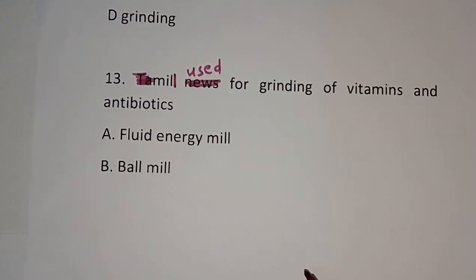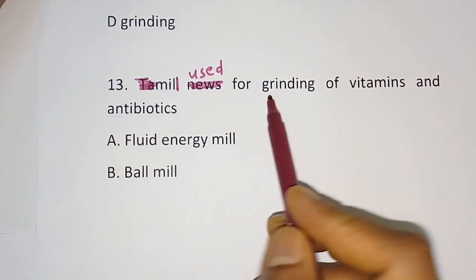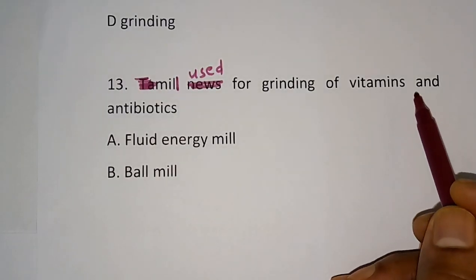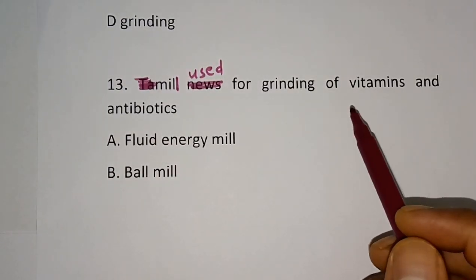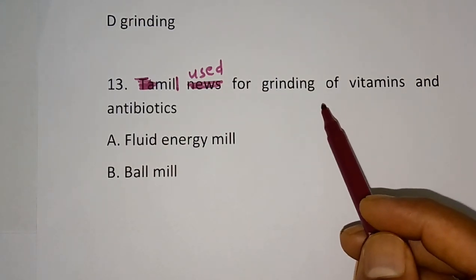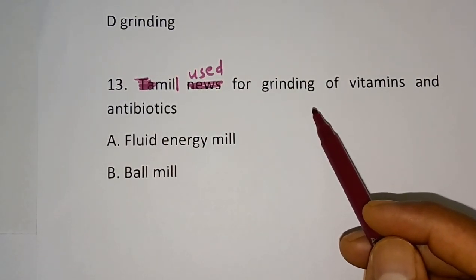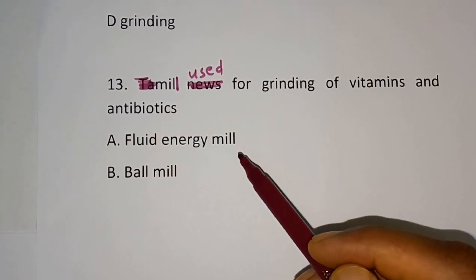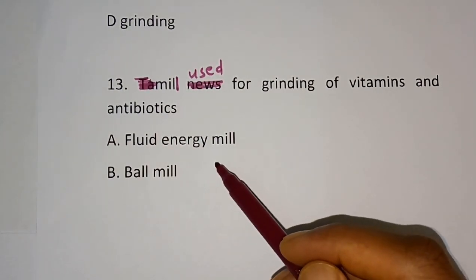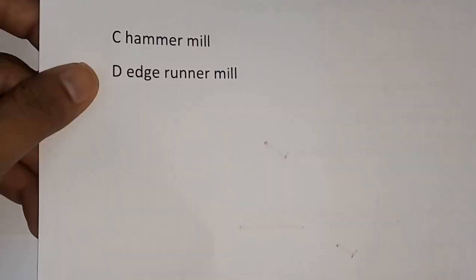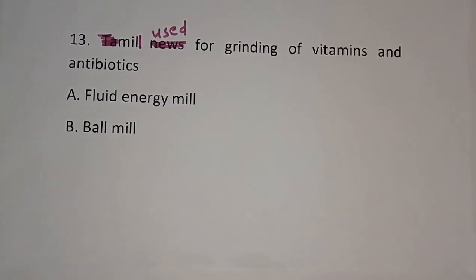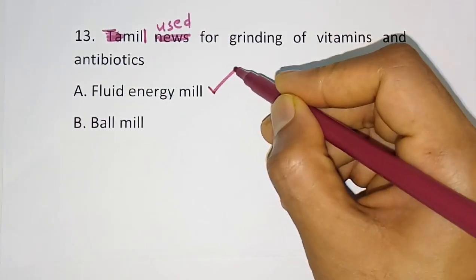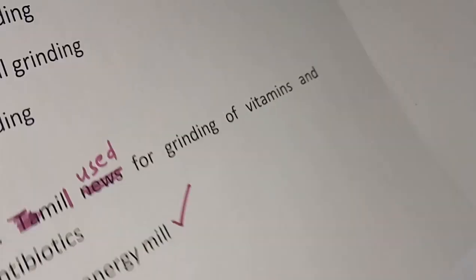Question number 13: The mill used for grinding of vitamins and antibiotics. Options are: fluid energy mill, bowl mill, hammer mill, edge runner mill. The correct answer is fluid energy mill — if it is vitamins and antibiotics, the size reduction is done by fluid energy mill.